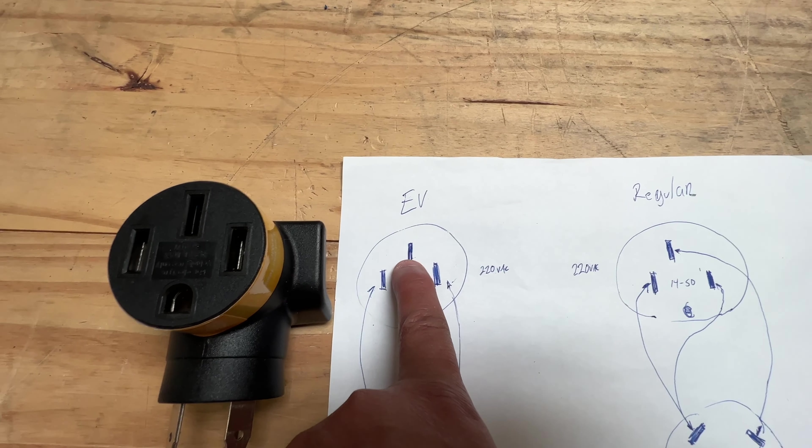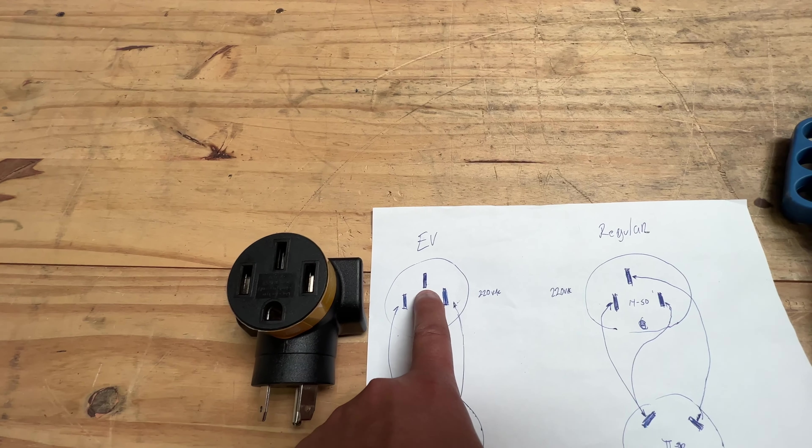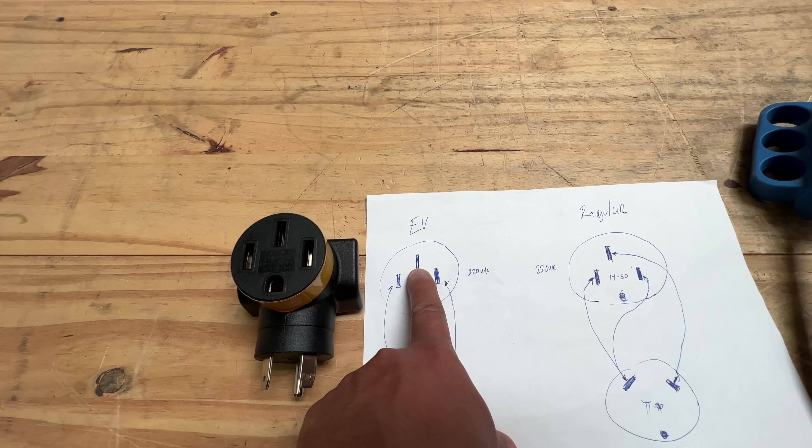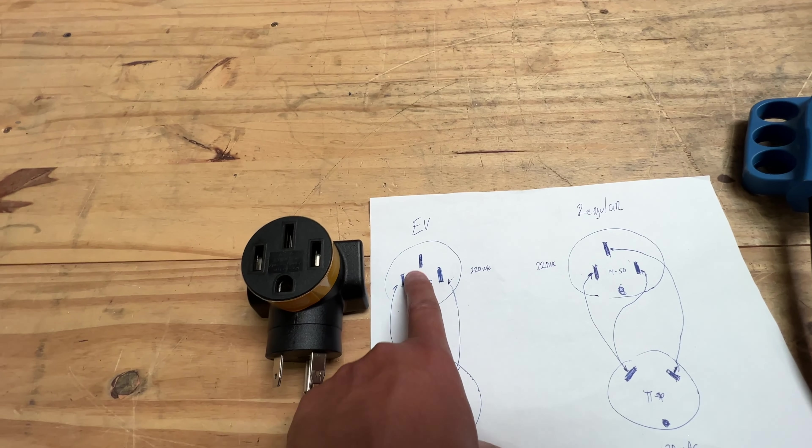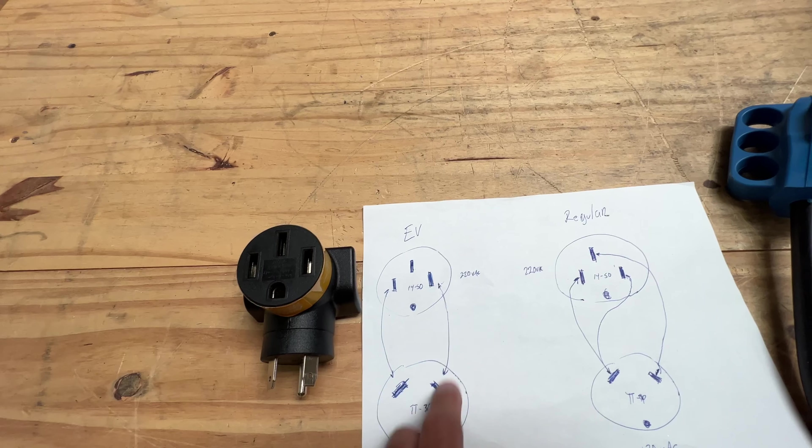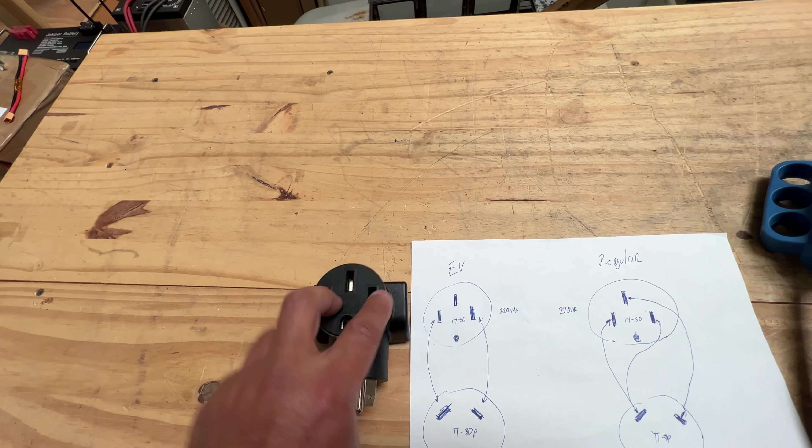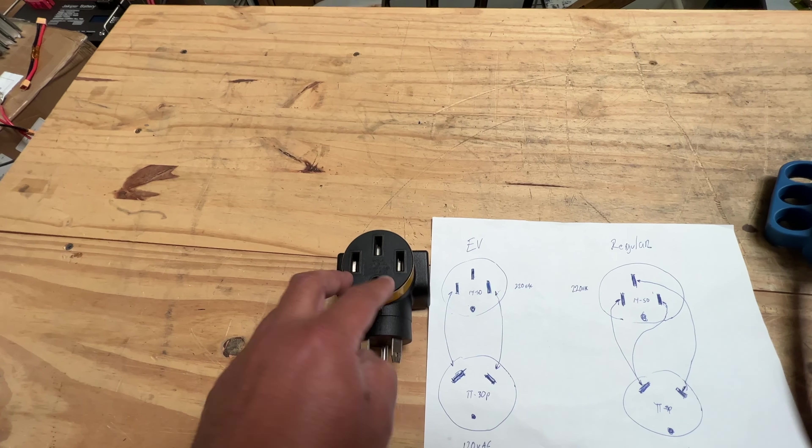On the EV one, the center tap, which is the neutral on the 14-50, is just being ignored. It's not connected to anything. What that does is allow you to connect your EV charger and it will only see half the voltage of what's expected at a 14-50 connector level.